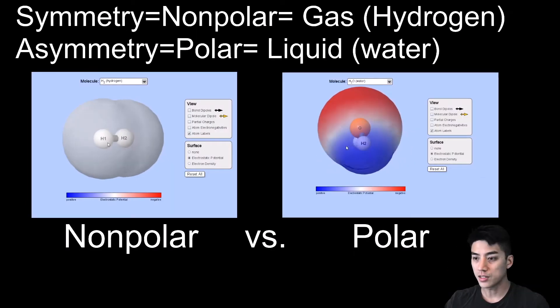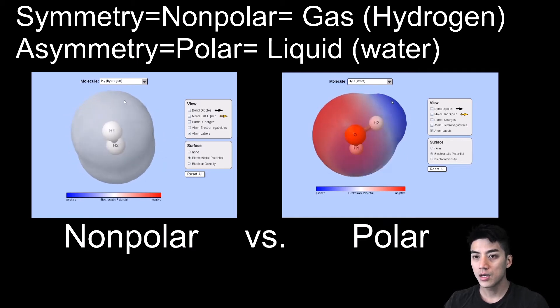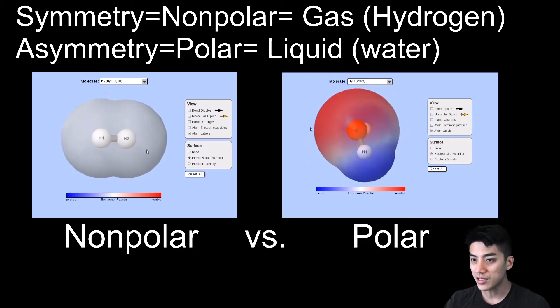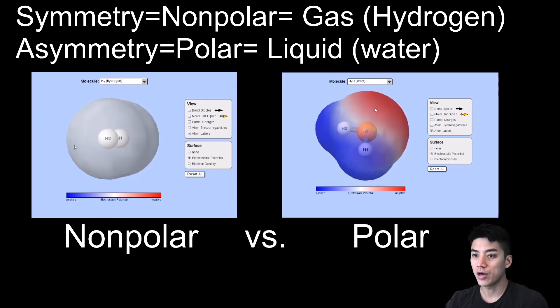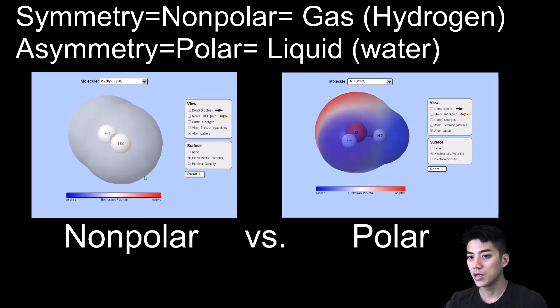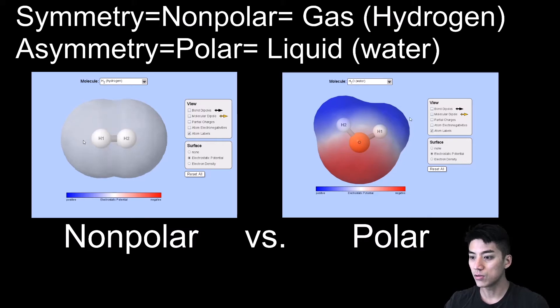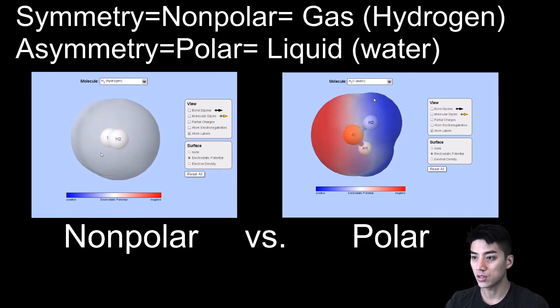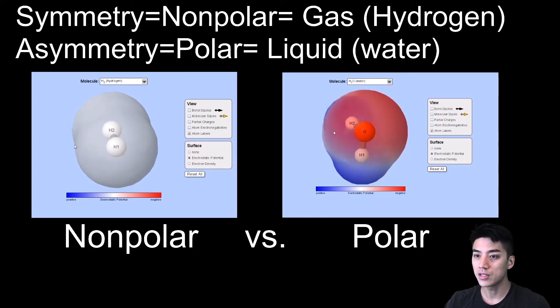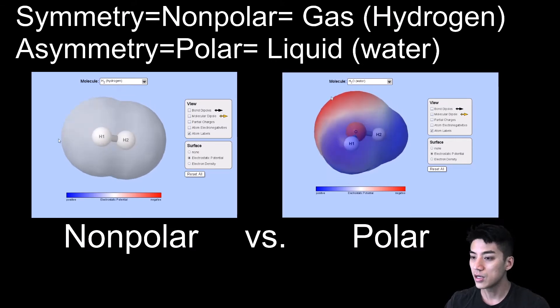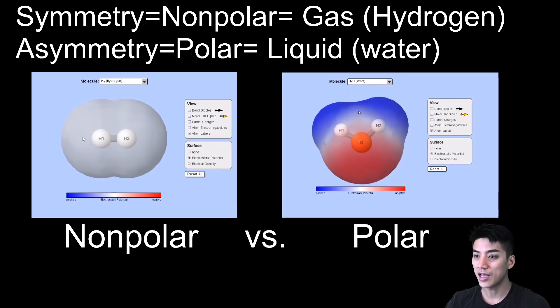Now that you understand how water has a lot of special properties because of its polarity, the other thing I want to point out is symmetry and asymmetry also determine whether or not a molecule is nonpolar or polar. On the left you have hydrogen, which is perfectly symmetrical, which makes it nonpolar. So there's this equal sharing of electrons. And because it has symmetry and it's nonpolar, typically this means it will be a gas at room temperature. So hydrogen is a gas at room temperature. CO2 carbon dioxide, what you're exhaling right now, is also a symmetrical nonpolar molecule. And guess what, you're breathing out a gas at room temperature.